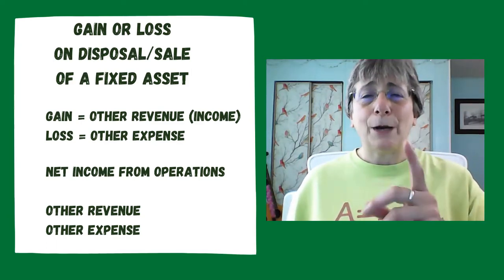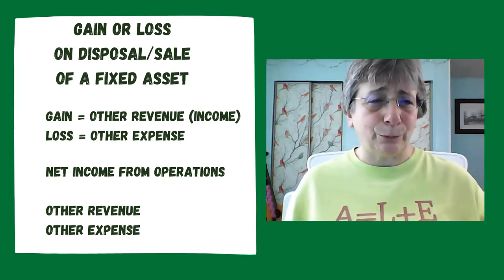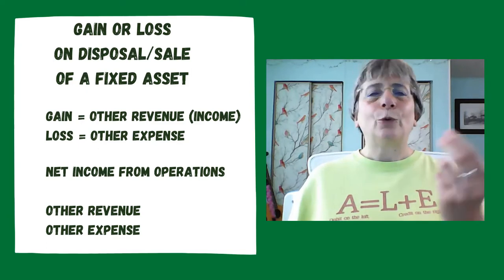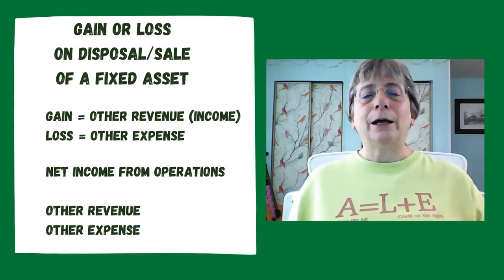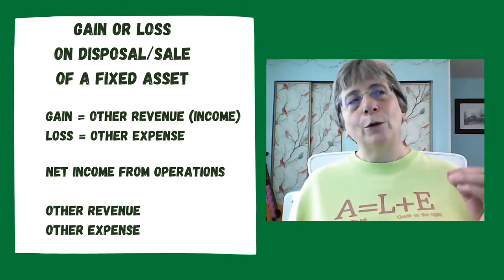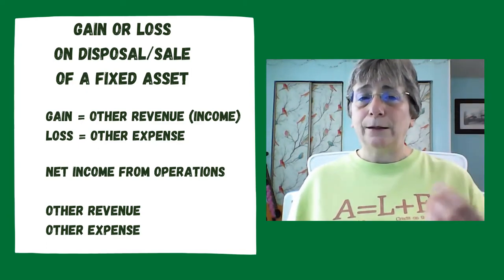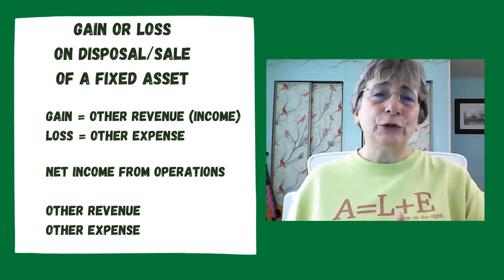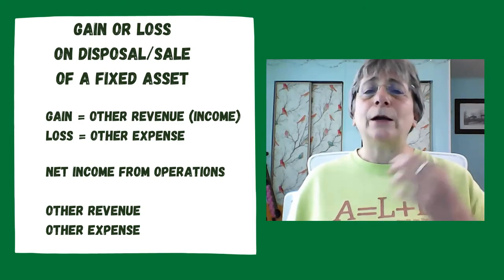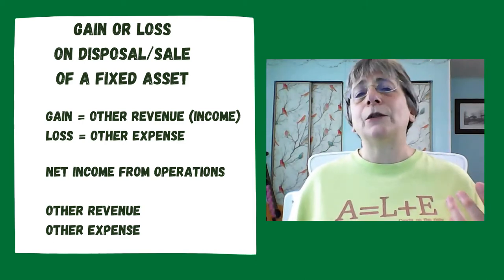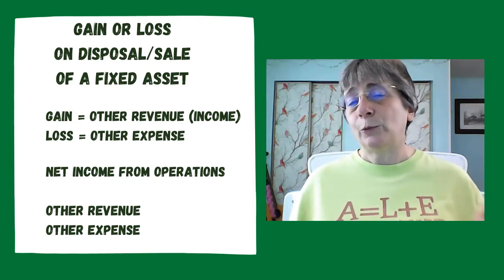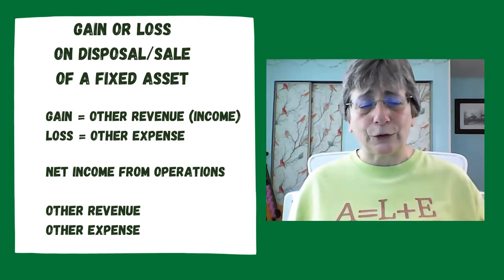So the account type for gain on sale of an asset is other revenue. It's not regular revenue like we've had in all of our other videos — it is other revenue or other income. That's a specific account type that tells our accounting software where to put this in our financial statements. Because it is an other revenue account, it has a normal balance that is a credit. We increase it on the credit side and decrease it on the debit side when doing journal entries.